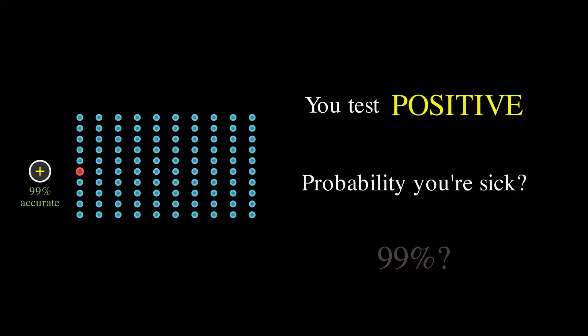And the real answer will blow your mind. Let's think about what happens when we test all 100 people in our population. We have one sick person and 99 healthy people. Remember, that's our starting point. When we test the one sick person, there's a 99% chance they'll test positive, so they almost certainly will.